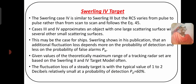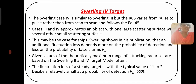Swerling Case 4 is similar to Swerling Case 3, but the RCS varies from pulse to pulse rather than from scan to scan, following equation four. Cases 3 and 4 approximate an object with a large scattering surface with several other small scattering surfaces. Swerling showed in his publications that an additional fluctuation loss depends more on the probability of detection and less on the probability of false alarm. This gives the value of the theoretical maximum range of the tracking radar based on the Swerling 2 and 4 target models.